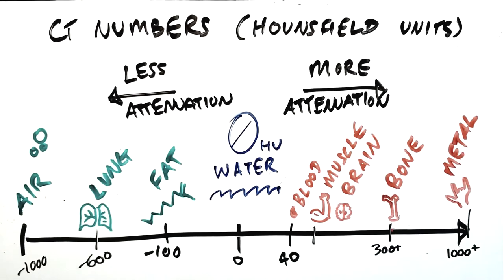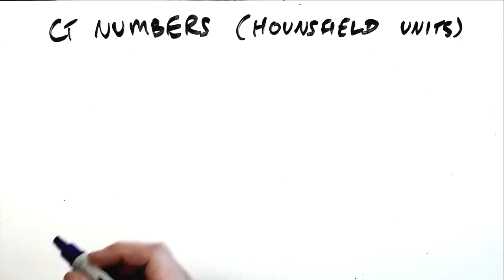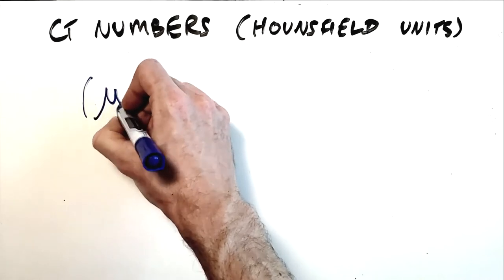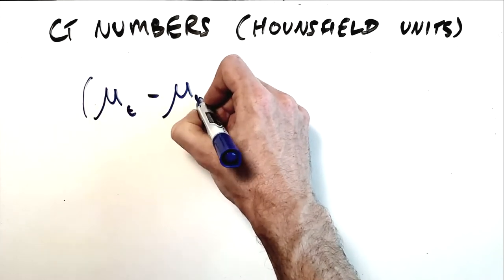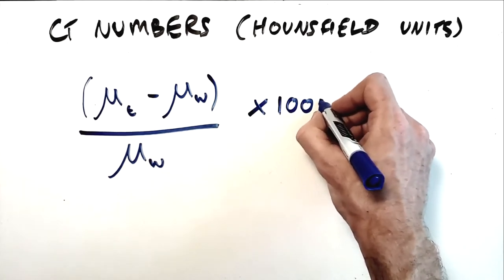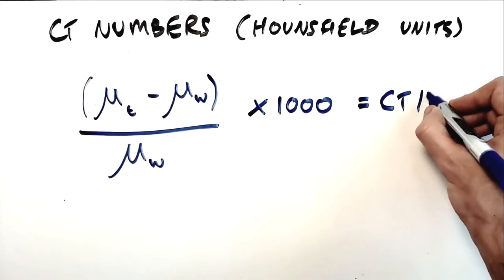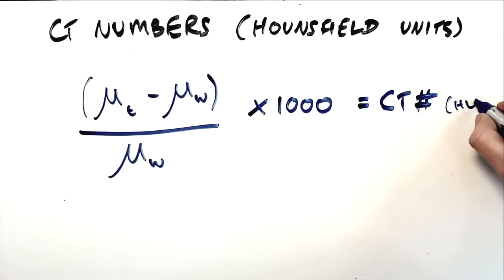To calculate these CT numbers we need a mathematical way to describe the amount of attenuation relative to our zero level reference point of water. To do this we take the difference between the linear attenuation coefficient of our tissue, mu t, and the linear attenuation coefficient of water, mu w, divide that difference by the linear attenuation coefficient of water, mu w, and then multiply that number by 1000 to place on the Hounsfield scale.